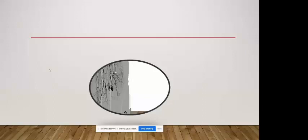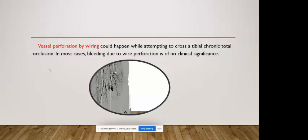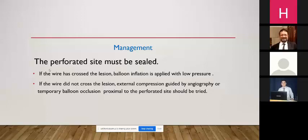The main complication is vessel perforation by the guide wire, which occurs while attempting to cross a tibial chronic total occlusion. In most cases, bleeding due to wire perforation is of no clinical significance, but it may sometimes cause a hematoma and lead to compartment syndrome. For management: if the wire has crossed the lesion, balloon inflation is applied with low pressure. If the wire did not cross the lesion, either external compression or temporary balloon occlusion proximal to the perforated site should be tried.